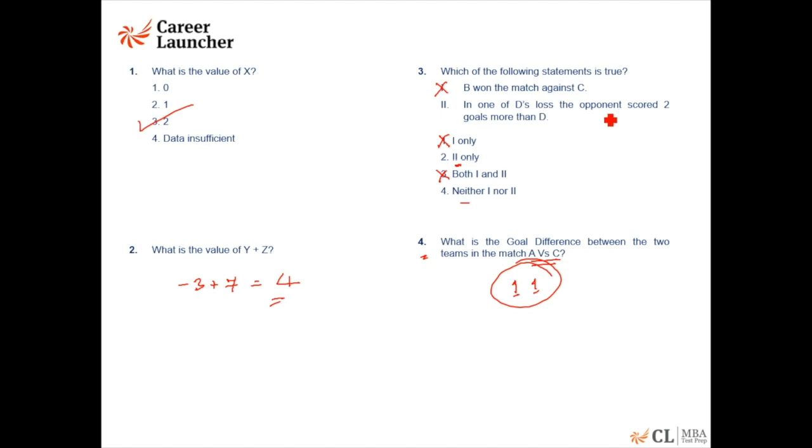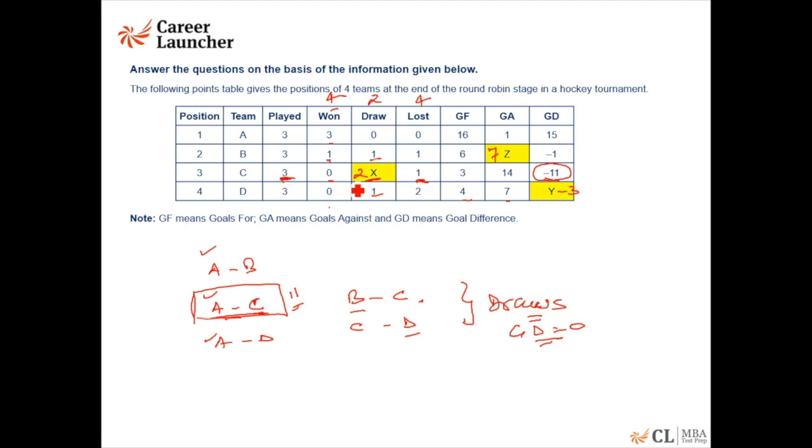In one of D's loss, the opponent scored two goals more than D. Let's look at team D now. What are the matches of team D? Team D has two losses. It has lost 1 against definitely A. Team D has drawn with C. That means in the match against B also, team B has won. So these are the two losses for team D.